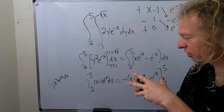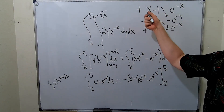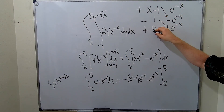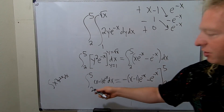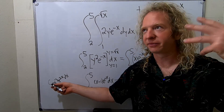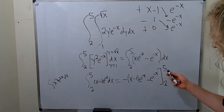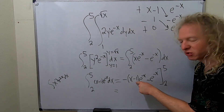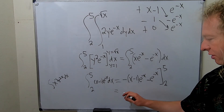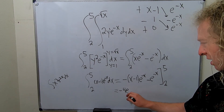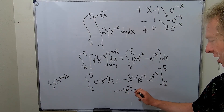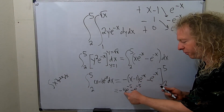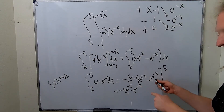This equals the definite integral from 2 to 5. You always plug in the top limit first — and it's really easy to mess up here because you're plugging it in for the y. When you plug in square root of x, the square root goes away because it's being squared, so you get x times e to the negative x. Then you subtract and plug in 1 for y: 1 squared is 1, so this is just e to the negative x. And this is dx.